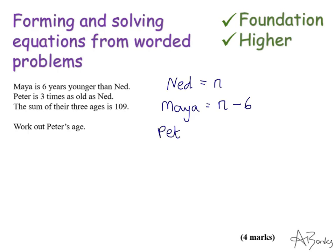And then we have Peter and Peter is three times as old as Ned. So that's three times n or three n. So they're my three ages and you'll actually pick up some marks just from doing this step.